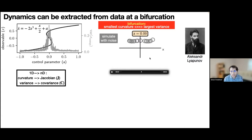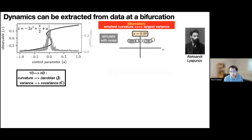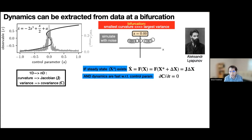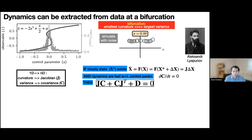This generalizes to N dimensions, important for tens of thousands of genes. Instead of curvature, we refer to the Jacobian, and instead of variance, the covariance — it's essentially the same story. If there are steady states and the underlying dynamics are fast with respect to the control parameter A, then the continuous-time Lyapunov equation holds: a relationship between the Jacobian — governed by dynamics we generally don't know — and the covariance, which we can learn directly from data.